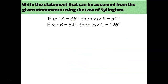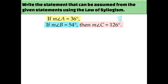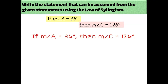Let's try a numerical example. If the measure of angle A is 36 degrees, then the measure of angle B is 54 degrees — that's P then Q. Then: if the measure of angle B is 54 degrees, then angle C measures 126 degrees — Q then R. Since these two statements are linked, I can eliminate Q. The overall conclusion is: if the measure of angle A is 36 degrees, then the measure of angle C is 126 degrees.